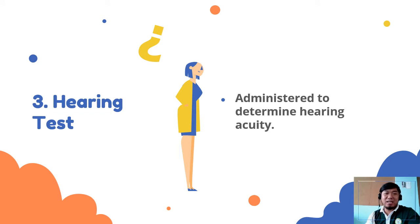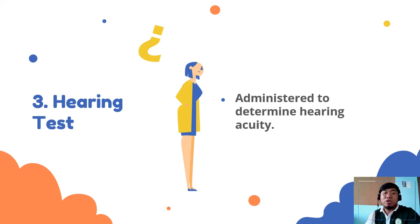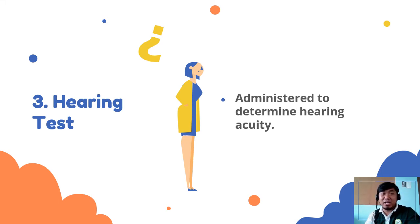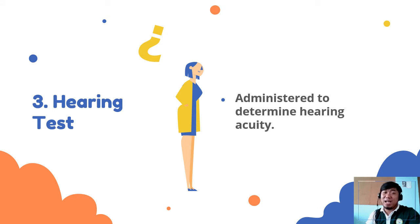Third is the hearing test, which is done to check our ears' health. There are different materials used to measure hearing ability. Usually, doctors use an audiometer to determine hearing sensitivity to different frequencies. A vibrating tuning fork is also used to determine if you can hear a ringing sound, and an otoscope is used to check the internal structure of our ears. Mahalaga na alagaan natin ang ating pandinig tulad ng pag-aalaga natin sa ating mata.